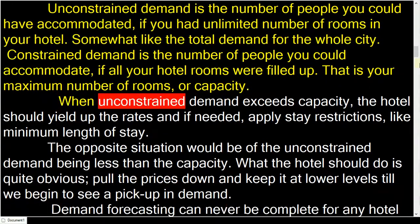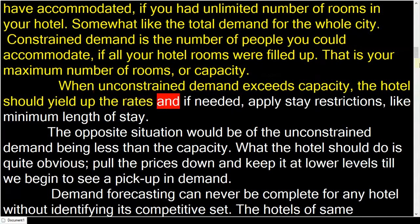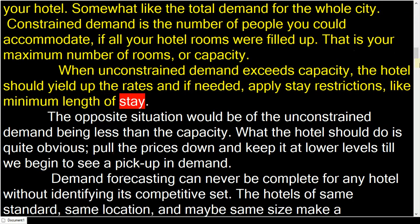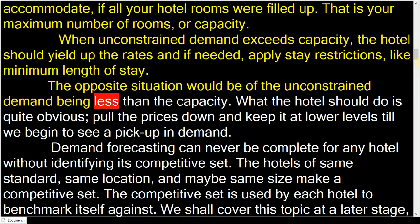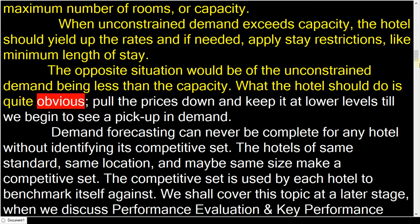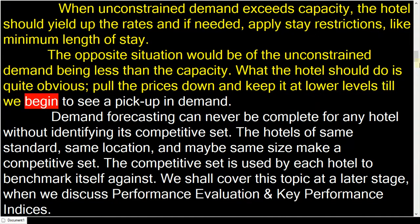When unconstrained demand exceeds capacity, the hotel should yield up the rates and, if needed, apply stay restrictions like minimum length of stay. The opposite situation would be when unconstrained demand is less than the capacity. What the hotel should do is quite obvious: pull prices down and keep them at lower levels until we begin to see a pickup in demand.